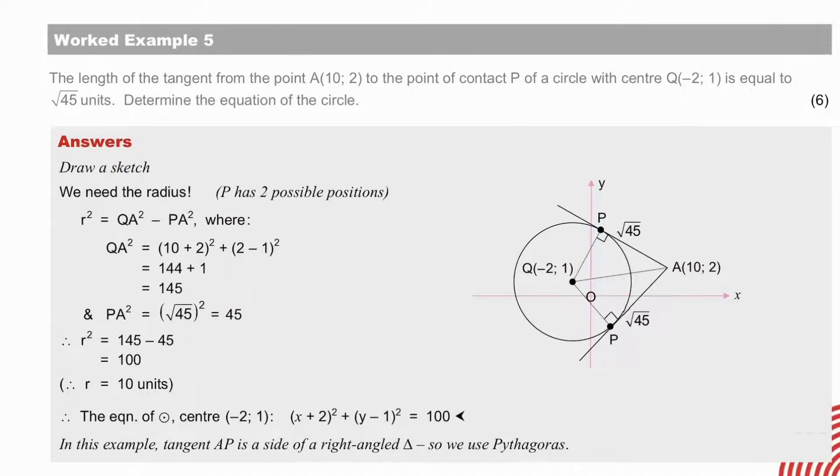Pause to check your answer. We need to determine the equation of the circle. We have the center Q, so we need to find r, the radius. r squared is equal to QA squared minus AP squared. And we find QA squared from the distance formula. And this square of AP is simply 45. And therefore, r squared is equal to 100. And we substitute the coordinates of the point minus 2, 1, together with r squared equal to 100, to find the equation of the circle.